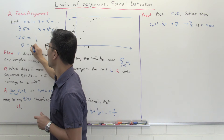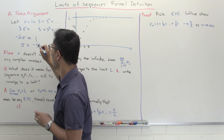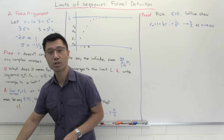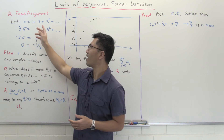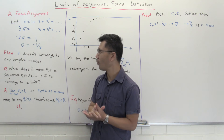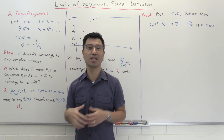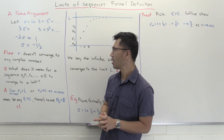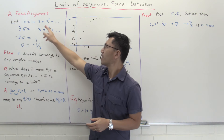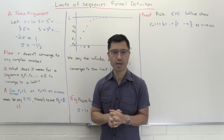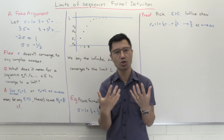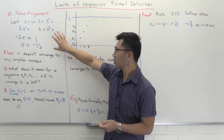This is a simple equation: minus 2·Sigma = 1. We divide by minus 2 to get Sigma equals negative one half. Of course you're probably saying this is ridiculous — how can 1 plus 3 plus 3 squared and so forth equal minus a half? The flaw in the argument is that this sum doesn't converge to any complex number.